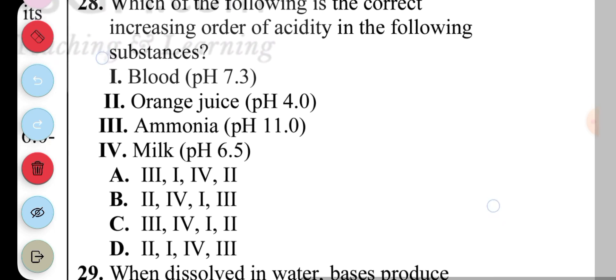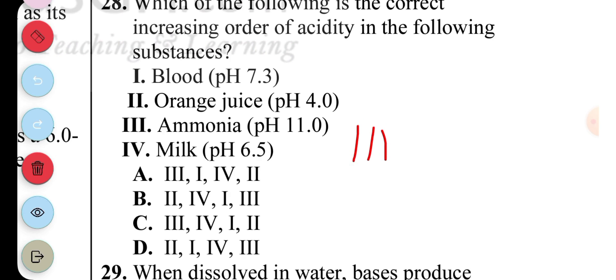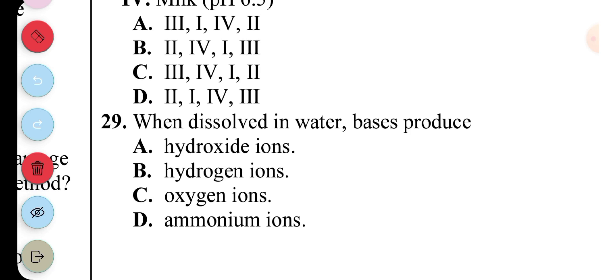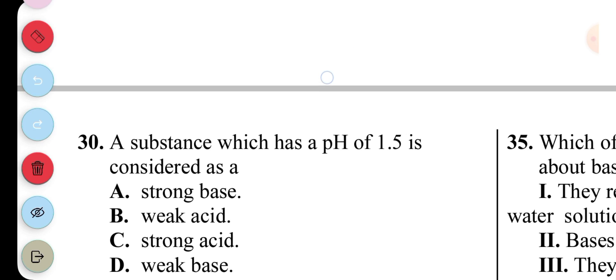Question 28: Which of the following substances... So first we start with I which is 11, followed by II which is 7.3, followed by IV which is 6.5, then III. So looking at it, question 28, the answer is A. Question 29: When dissolved in water, base produces... Base produces hydroxide ions, so the answer is A. Question 30: A substance which has a pH of 1.5 is considered as a strong acid. So C, that's question 30.